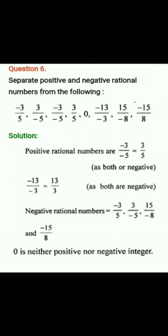Solution: Positive rational numbers are -3/-5 = 3/5 (as both are negative and cancel out), 3/5, and -13/-3 = 13/3.